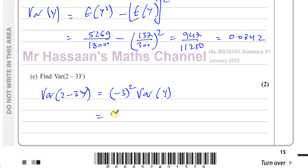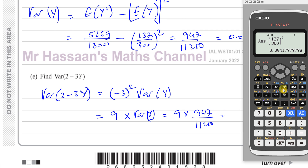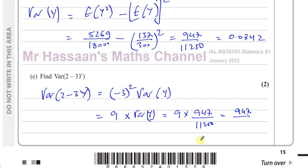That's 9 times 947 over 11250, which gives 947 over 1250, equal to 0.7576 to three significant figures. That's the variance of 2 minus 3Y, and that's the end of the question — part E. The whole question is about discrete random variables.